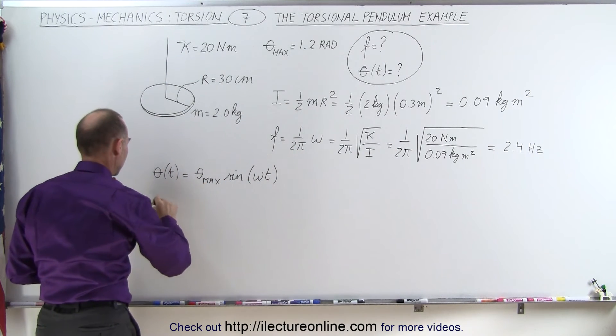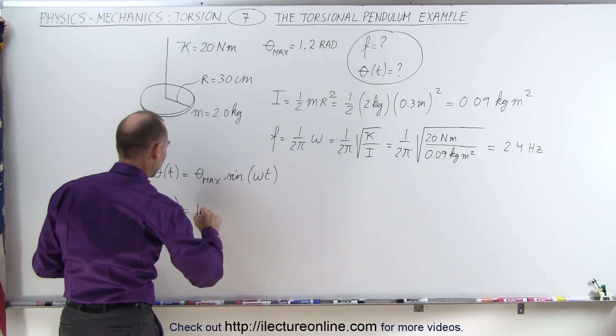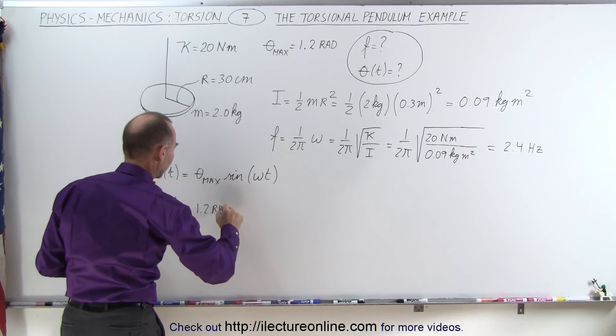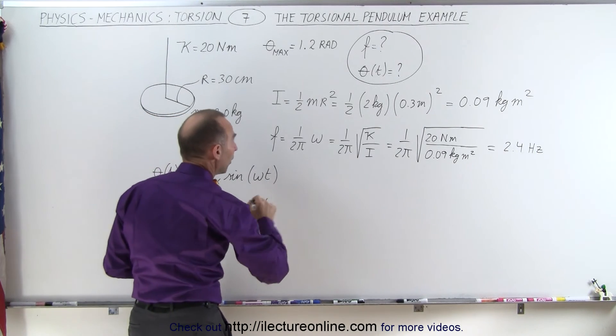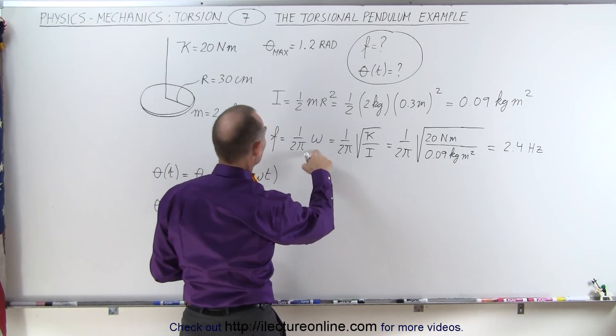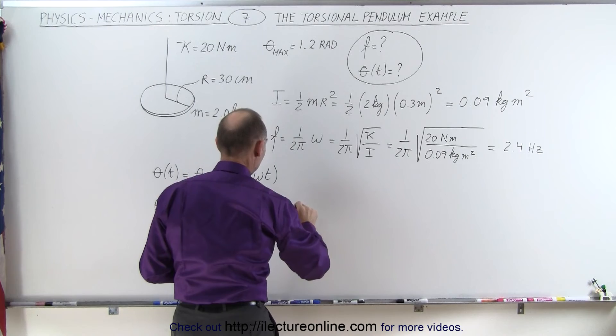So we can say that the angle as a function of time is going to equal the maximum, which is 1.2 radians, multiplied times the sine of ω. Well, ω equals 2π f, so it would be 2π f times t.